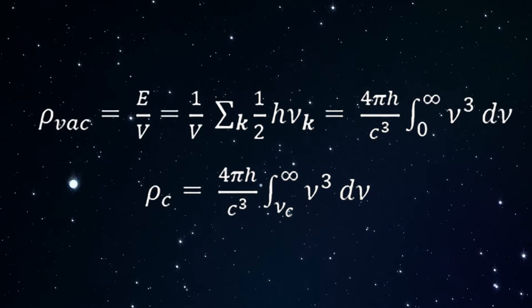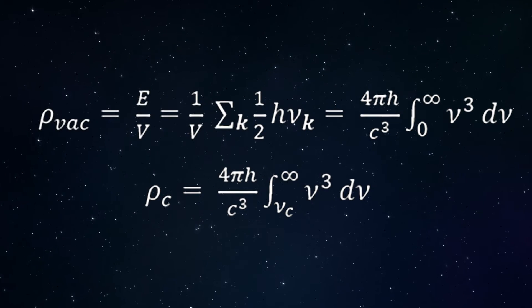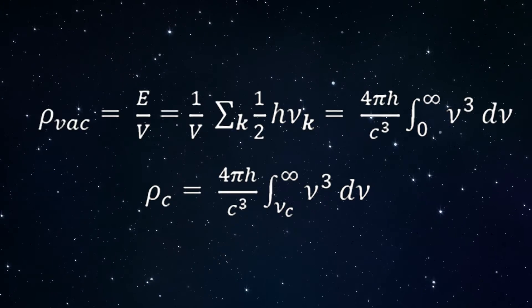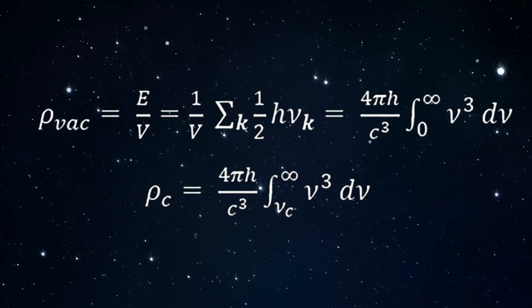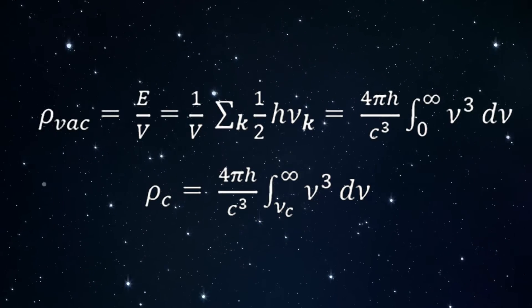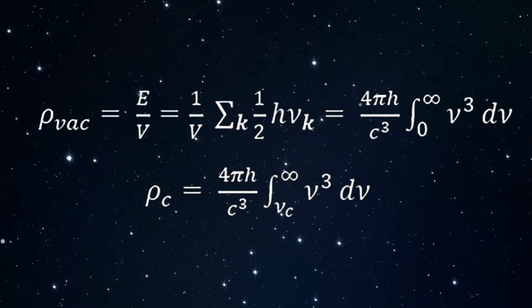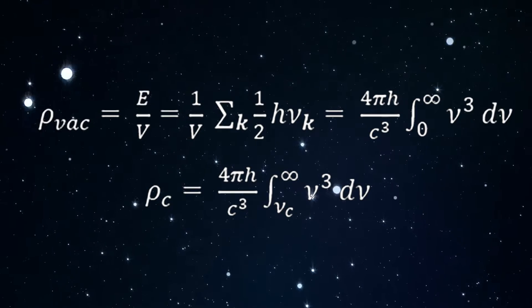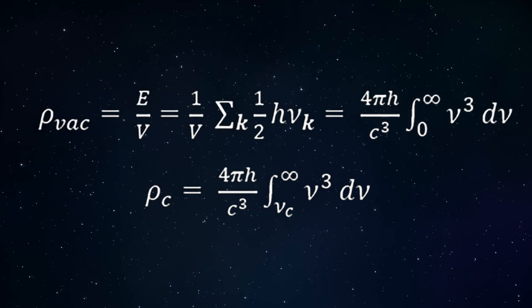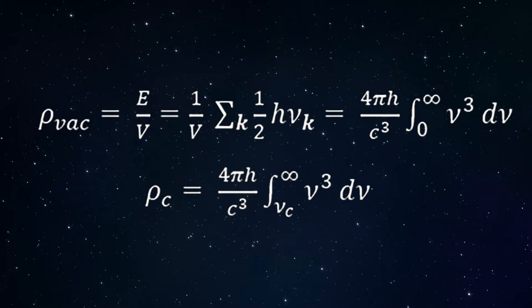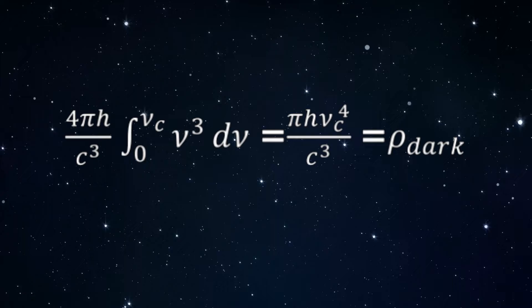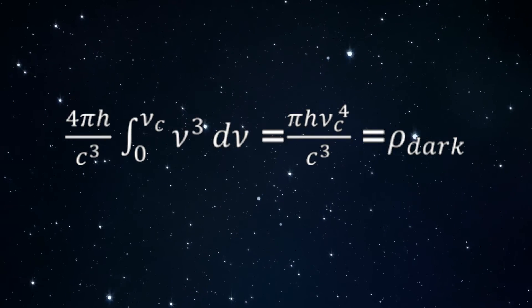If instead we subtract the energy density rho sub c of virtual photons of zero-point vacuum fluctuations captured by ejected water nanoclusters through the microscopic dynamical Casimir effect, the divergent integral is largely cancelled. Nu sub c is the cutoff vibrational frequency of the ejected water nanoclusters. This leaves the finite quantity shown, to be identified with the dark energy density.